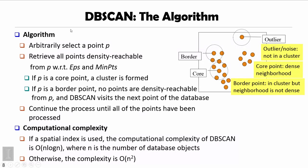This algorithm is quite efficient. If a spatial index is used to find neighbors quickly, the computational complexity of DBSCAN is O(n log n), where n is the number of database objects. Without a spatial index, the complexity is O(n²) since all points must be checked each time. Comparatively, DBSCAN is still a pretty efficient algorithm.